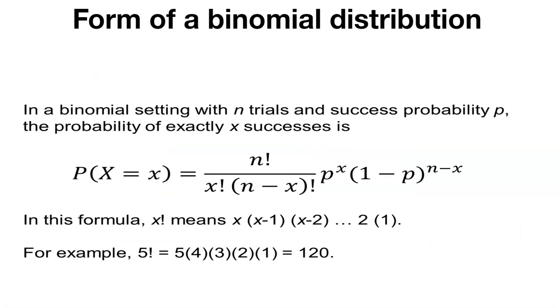We might want to find out the form of the binomial distribution. This is a formula we can use to find out the probability that certain things happen, given we know what N and p are. N is our number of trials, p is our probability of success. The probability of exactly X successes can be found with this formula.